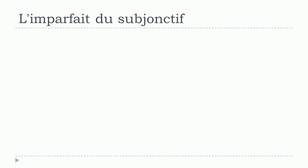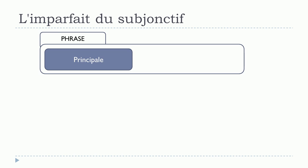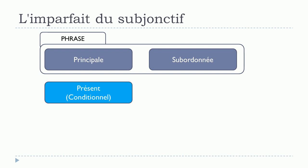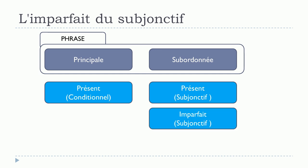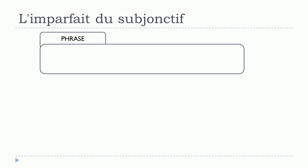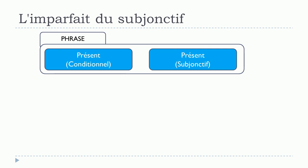Let's take another situation with la principale and la subordonnée. If we have le présent du conditionnel in la principale, then normally we should have le présent du subjonctif or l'imparfait du subjonctif in la subordonnée. However, in most of the cases the imparfait du subjonctif form won't be used here — even if it would be possible and correct.